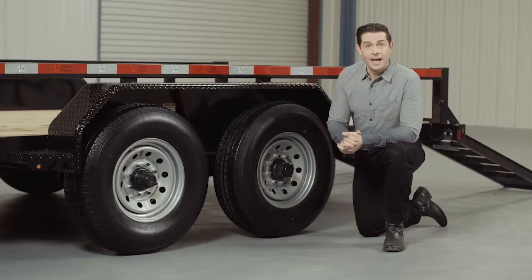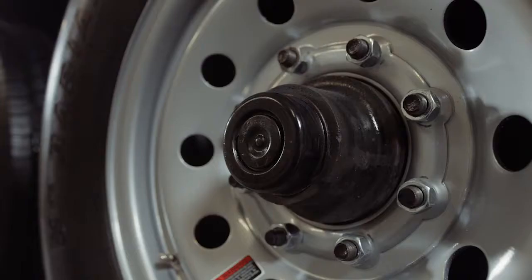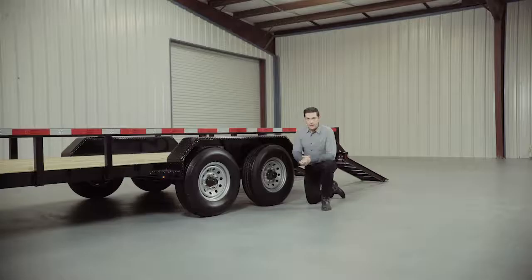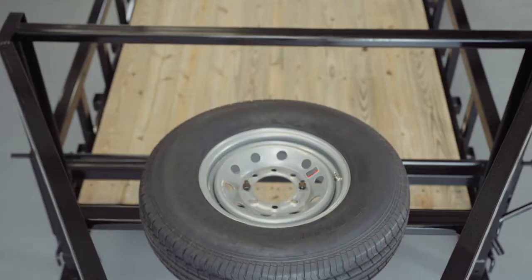And where the rubber meets the road is going to be four 16 inch premium radial 10 ply tires mounted on 8 hole high grade steel wheels for maximum stopping power. There's also an option for a spare tire and wheel which mounts inside the top of the gooseneck, so it's out of the way yet easily accessible.